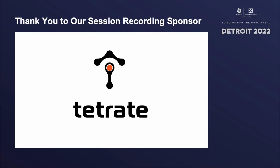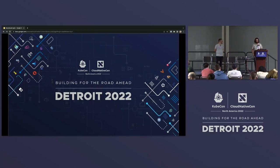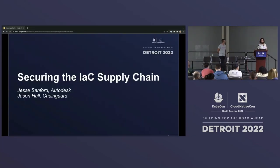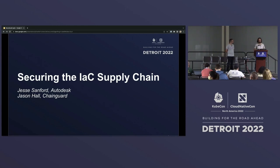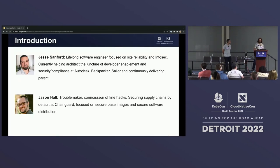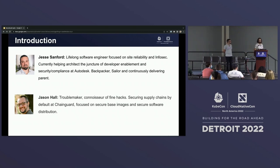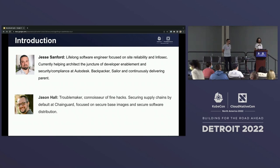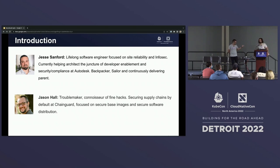Jason and I are here to talk to you about securing the IAC supply chain. I'm Jesse, a senior principal software engineer at Autodesk, working at the juncture of our security and compliance teams and our developer enablement team, focused on securing secure software best practices into our infrastructure as code tooling. I'm Jason, and I work at ChainGuard, where we help companies like Autodesk adopt supply chain best practices like signing and verifying using Sigstore.